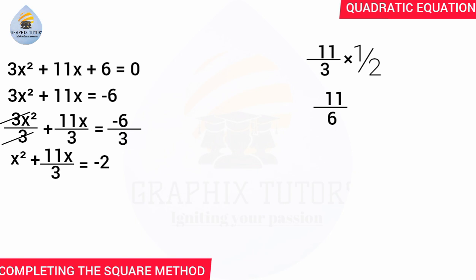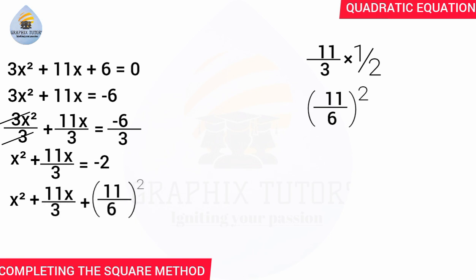After finding 11 over 6, we now square it. This squared value is what we are going to add to both sides of the equation. So writing the equation, we have x squared plus 11 over 3 times x plus (11 over 6) squared equals minus 2 plus (11 over 6) squared.